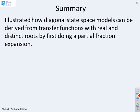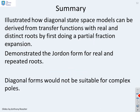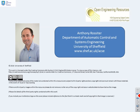So, a summary. We've illustrated how diagonal state-space models can be derived from transfer functions with real and distinct roots by first doing a partial fraction expansion. And we've also demonstrated the Jordan form for when you have real and repeated roots. I wouldn't recommend the use of diagonal forms if you have complex poles because then you'll have complex numbers in your state-space matrix and we don't want to go there.